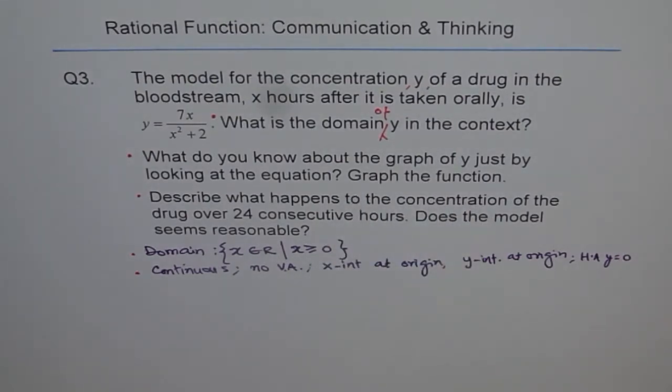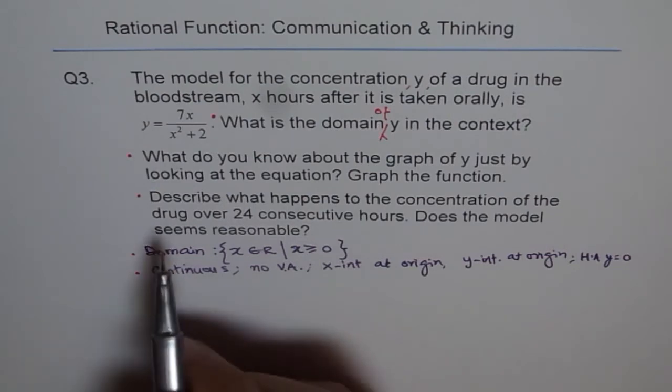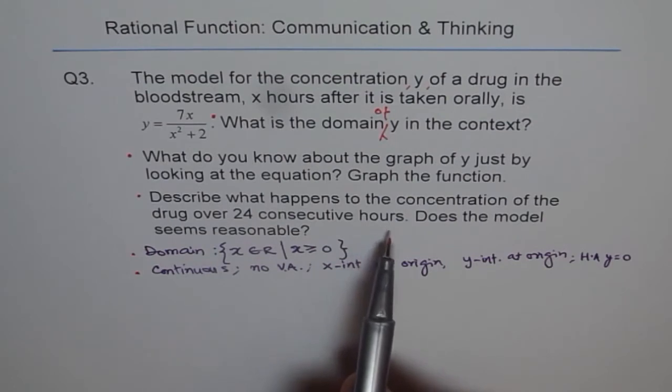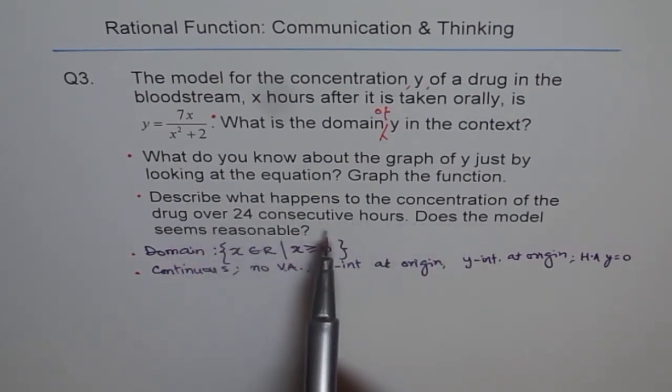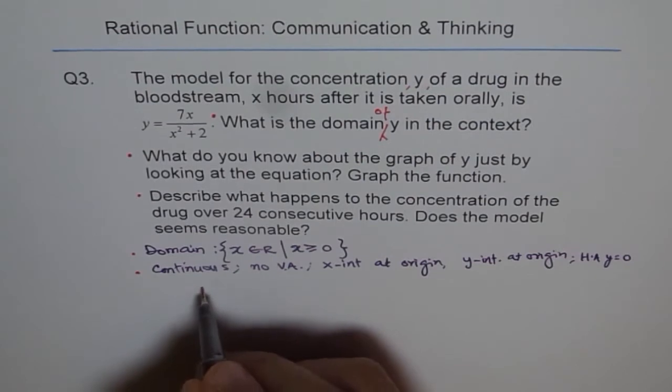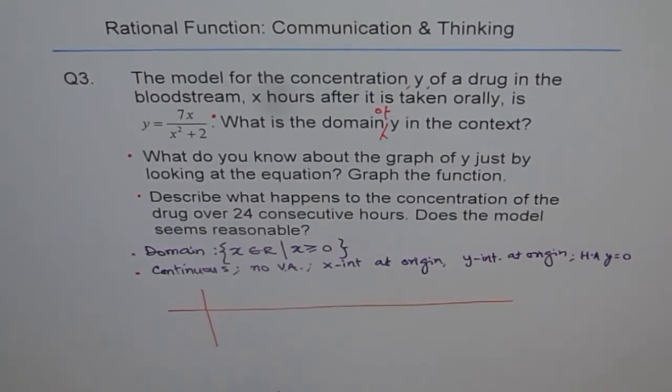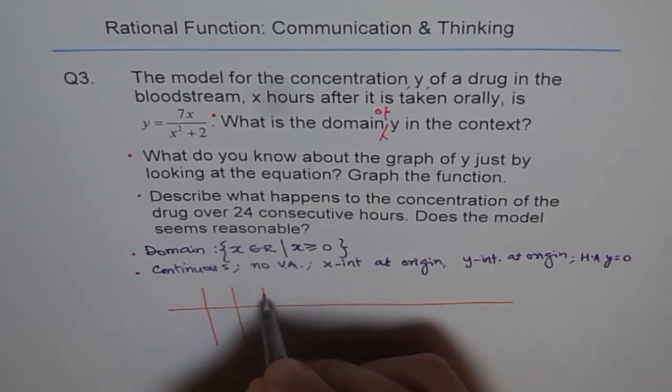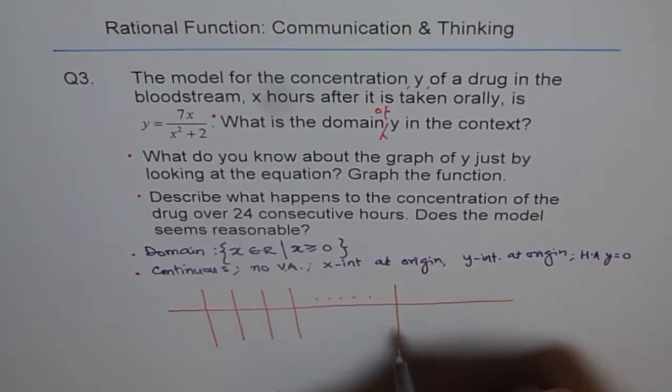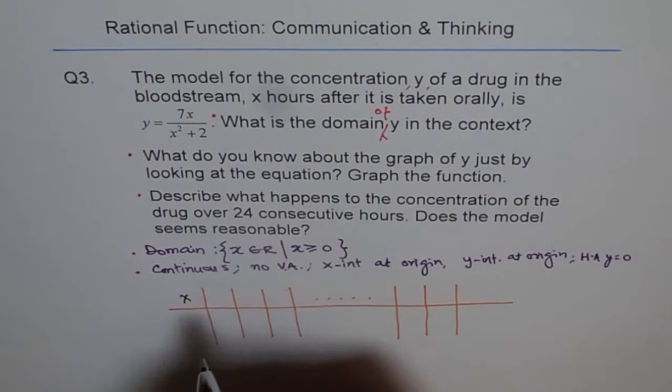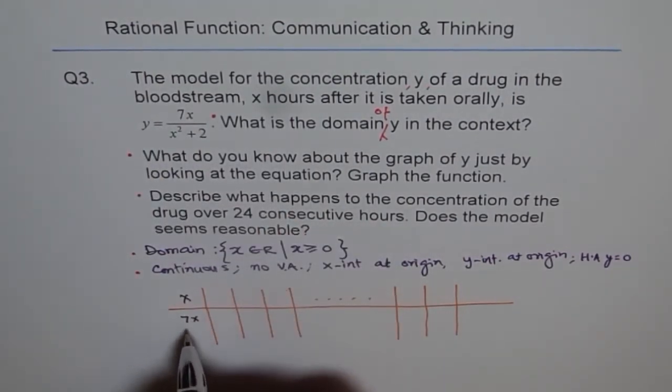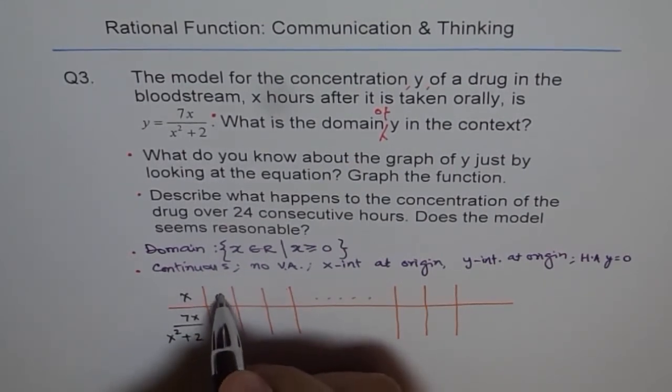Graph the function. Now, the next part is, describe what happens to the concentration of the drug over 24 consecutive hours. Does the model seem reasonable? The third part is describe what happens to the concentration of the drug over 24 consecutive hours. That means we literally have to make a table of values. So when we have to make a table of values, I'm not doing the calculation here, but I'm just telling you how to do it. So you can put different values of x up to 24 hours. If I write 0 here, so I get a 0. That's my first value.